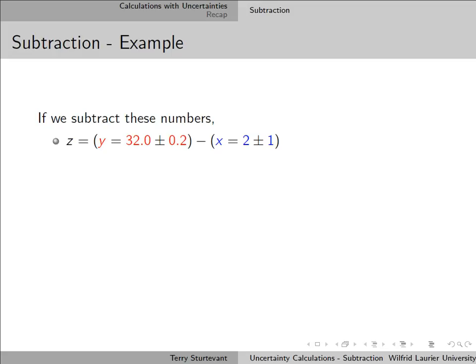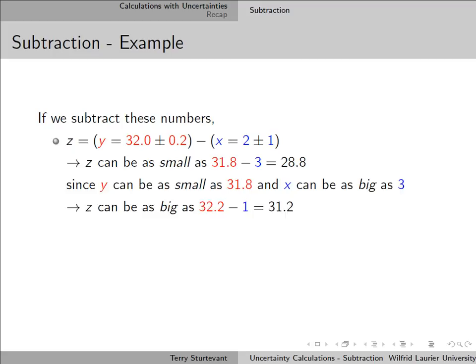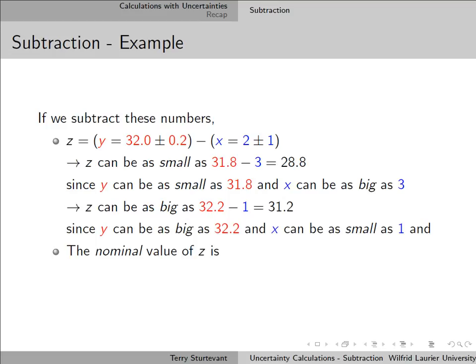If we subtract these two numbers and we call the result z, which is y minus x, then the smallest value that z can have is if y has its smallest value and x has its biggest value. So if we take 31.8 minus 3, we get 28.8. On the other hand, the biggest value z can have is if we have the biggest value for y and the smallest value for x, so that gives us 31.2.